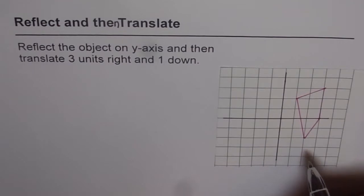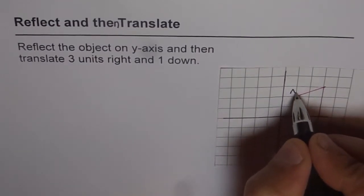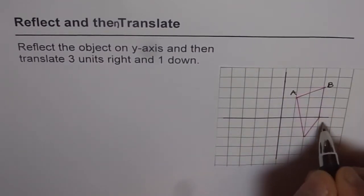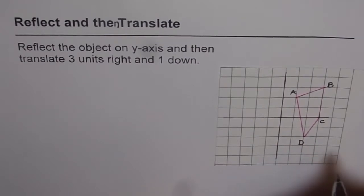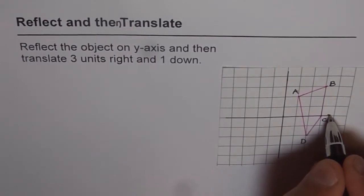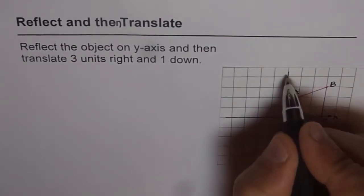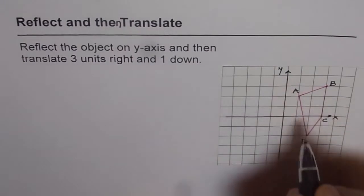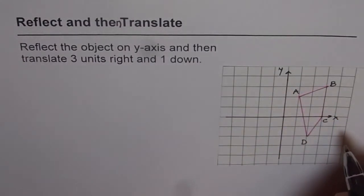So we are given an object here, let's name it as ABCD, a quadrilateral four-sided figure, on a coordinate plane, x and y-axis, where x is the horizontal axis and y is the vertical axis.